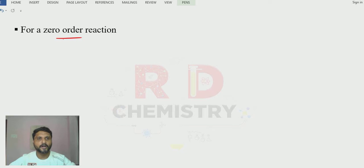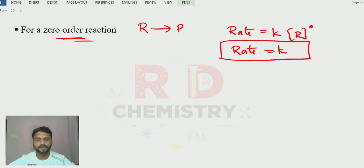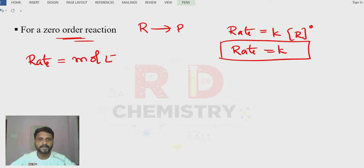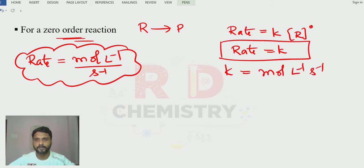For a zero order reaction, assuming reactant R gives product P, the rate is equal to K·[R]^0, which equals K·1 = K. The unit of rate is mol·L⁻¹·s⁻¹. For zero order, the unit of K is the same: mol·L⁻¹·s⁻¹, because rate equals K in this case.